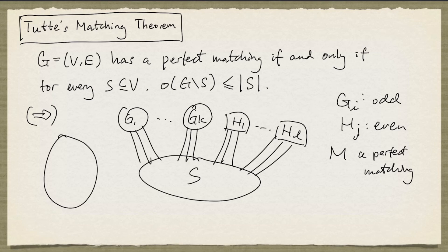Since every matching edge in a component joins two nodes in the component, we must have a node in the component that is joined to a node in S. And that shows that K cannot be more than the cardinality of S.